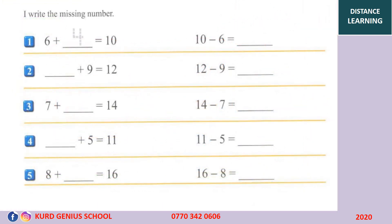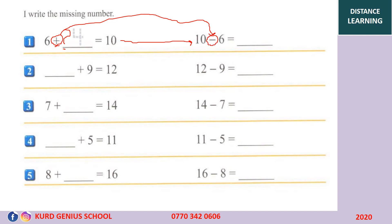Another example: 6 plus what number equals 10? We don't know this number — it's the missing one. We bring what's after the equal, which is 10. We change the plus to minus. So we say 10 minus 6 equals 4. Then we find the missing number, which is 4. So 6 plus 4 equals 10.